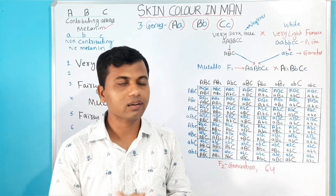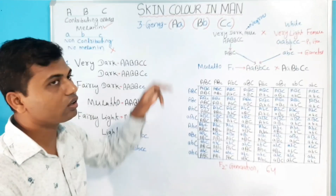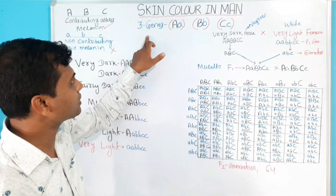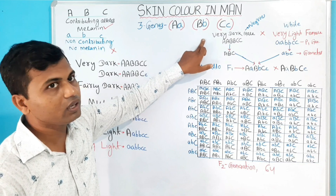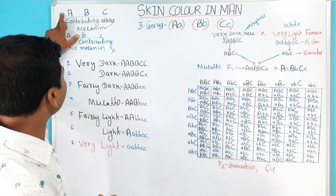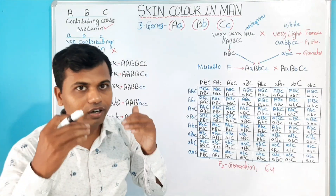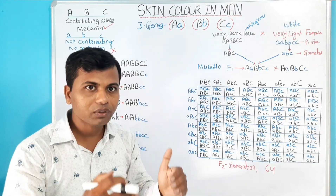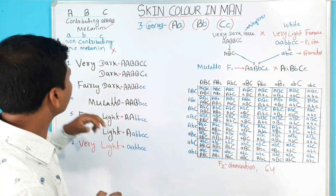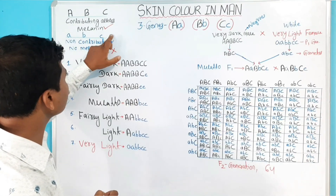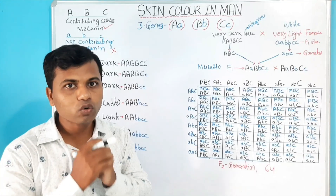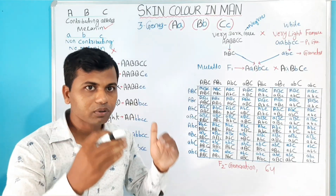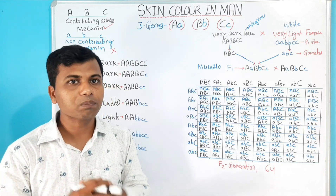The synthesis of melanin pigment is controlled by three genes or three allelic pairs: capital A / small a, capital B / small b, and capital C / small c. The alleles capital A, capital B, and capital C are contributing alleles — they have the capacity for synthesis of melanin. When a person has more contributing alleles, the person appears very dark. Whereas the alleles small a, small b, and small c are non-contributing — they have no capacity for synthesis of melanin. When a person has more non-contributing alleles, they appear lighter.